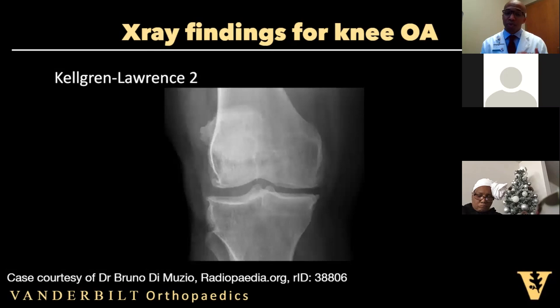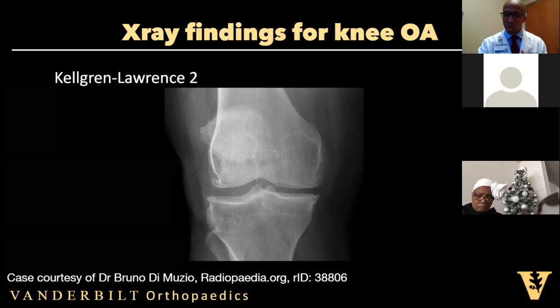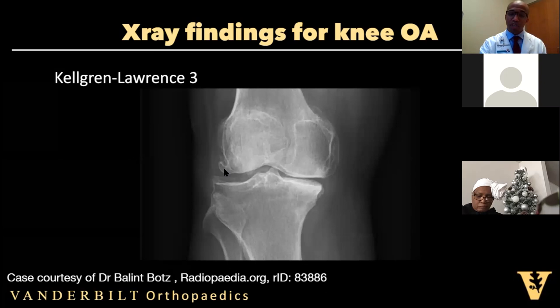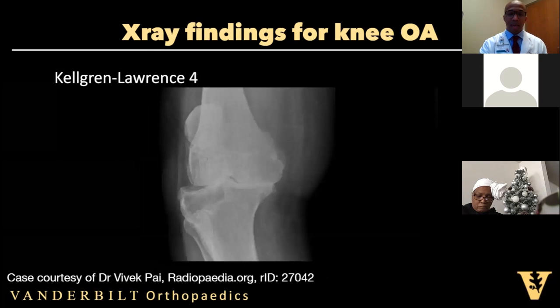Kellgren-Lawrence two is where osteophytes are definite — you can see those on the margin of the lateral joint space. The joint space narrowing is possible, possibly less than five millimeters, and there's still no notable sclerosis. Kellgren-Lawrence three is where we have moderate-sized osteophytes, definite joint space narrowing, and sclerosis — notice the white hue around the medial bone. And then Kellgren-Lawrence four — that's essentially bone on bone — with large osteophytes, no joint space, and significant sclerosis.